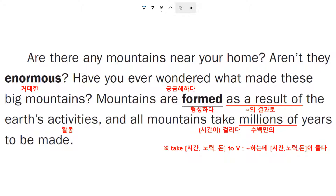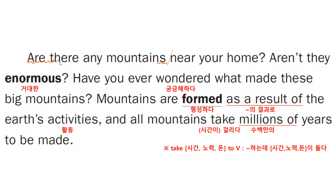Are there any mountains near your home? — 집 주변에, 당신의 집 근처에, 산이 있습니까? 'Any mountains' 자, 'are there'이죠, 'there is'가 아니라 'there are'. Aren't they enormous? — 'enormous'하면 거대한. 거대하지 않습니까? 큰 산이지 않습니까?